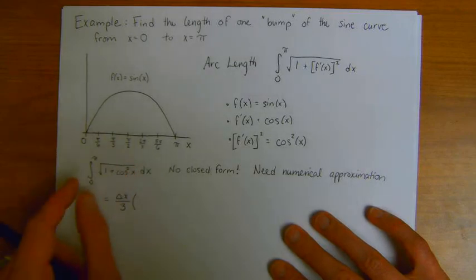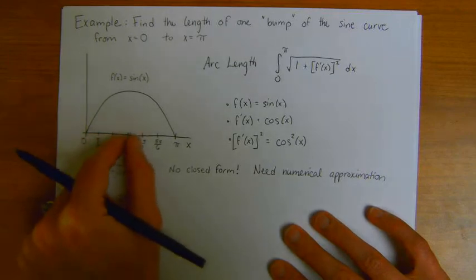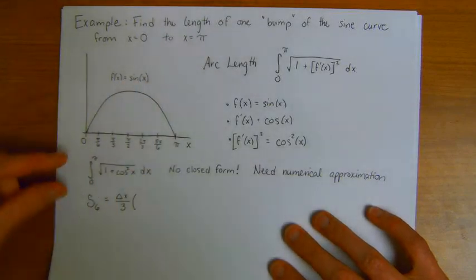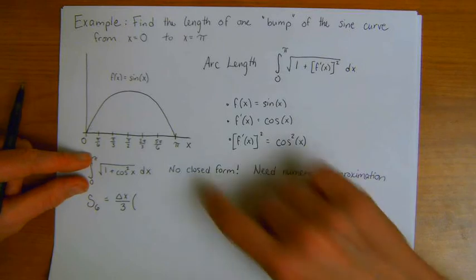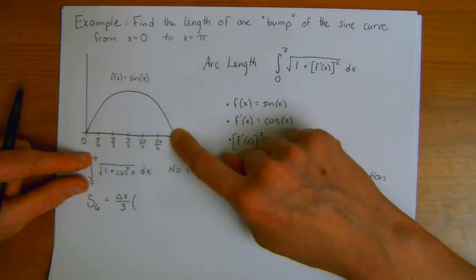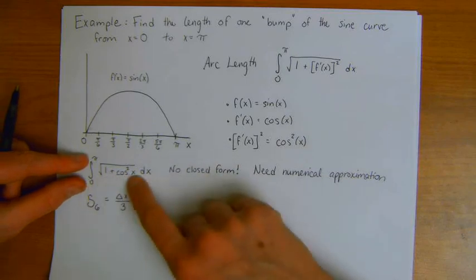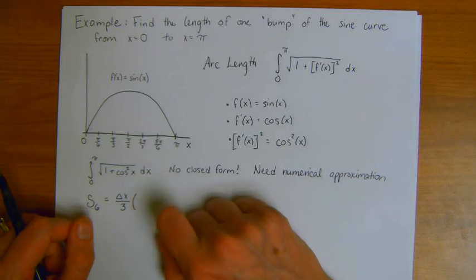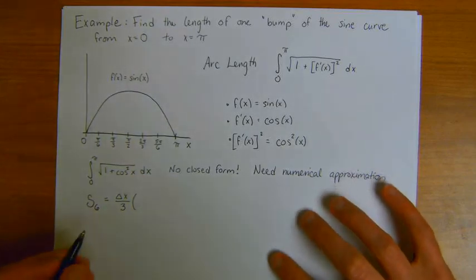So instead of writing this whole expression out each time, this is the function that I'm integrating. I'm not actually integrating the sine function, because I'm trying to compute this integral. And this is something that can be sort of confusing, because this was my original function that I'm finding the arc length of. But in my Simpson's approximation, I want to include this function as my function.